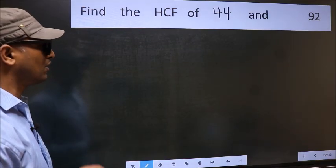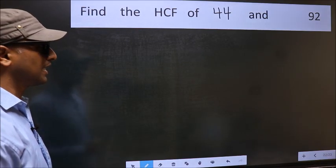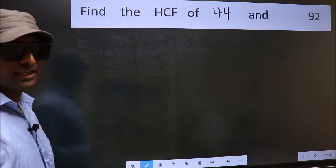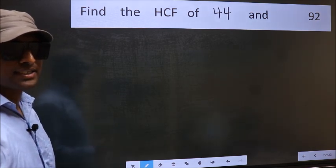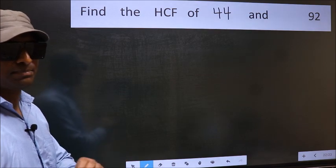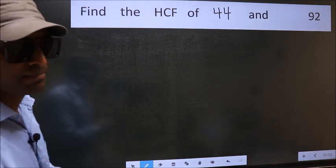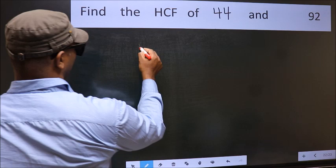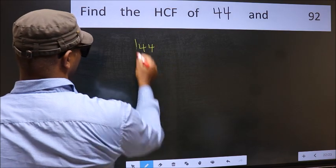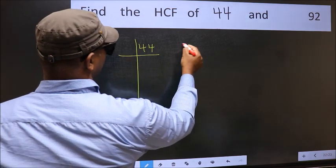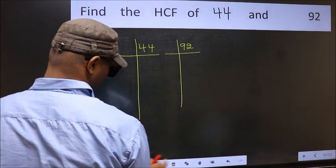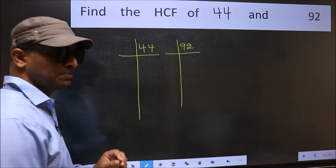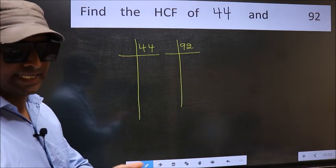Find the HCF of 44 and 92. To find the HCF, we should do the prime factorization of each number separately. That means factorizing 44 and 92. This is step 1.